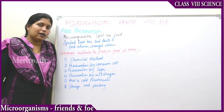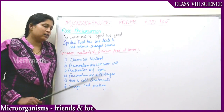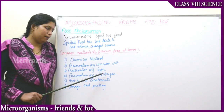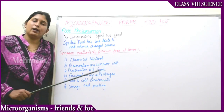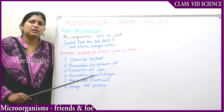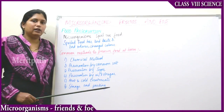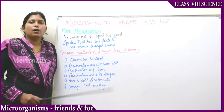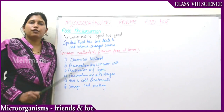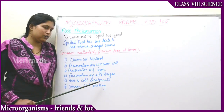Next is preservation by oil and vinegar. In an environment where there is oil and vinegar, bacteria and microorganisms will not grow. That is the reason food items can be preserved with the help of oil and vinegar. With oil and vinegar, fruits, vegetables, as well as fish and meat can also be preserved.